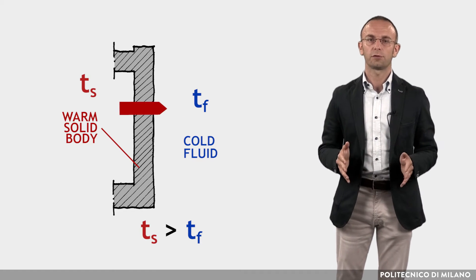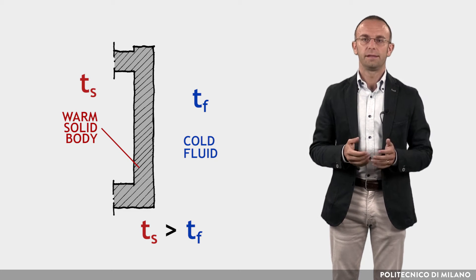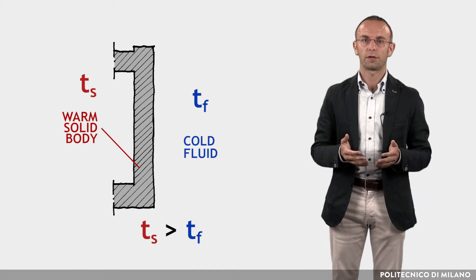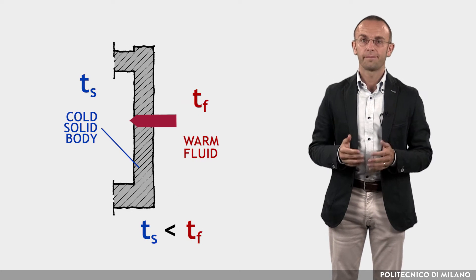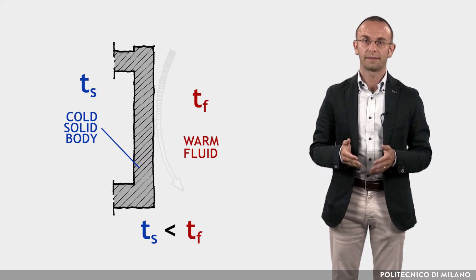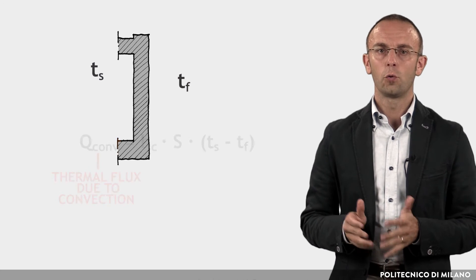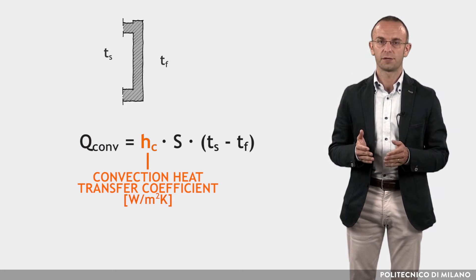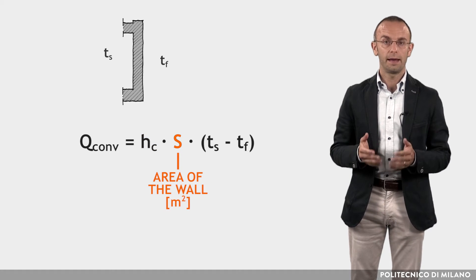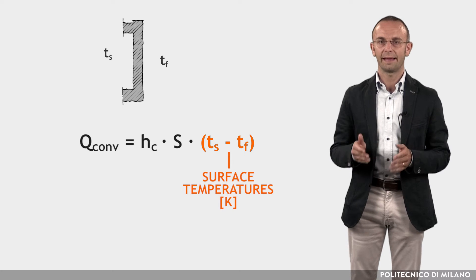In the second mechanism, convection, when a fluid flows around a warm solid body, the thermal agitation of the solid body is transmitted to the molecules of the fluid, which increase their speed and the fluid is heated. Since the portion of the warmer fluid in contact with the solid has a lower density than that of the rest of the fluid, it tends to move upwards. On the contrary, if the fluid is warmer than the solid body, the part in contact loses heat and cools down, its density decreases and it tends to move downwards. The thermal flux Q-conv due to convection is calculated by this formula, where Hc is the convection heat transfer coefficient in Watts per square meter Kelvin, S is the area of the wall in square meters, and Ts and Tf are respectively the surface temperatures of the solid body and the fluid in Kelvin.